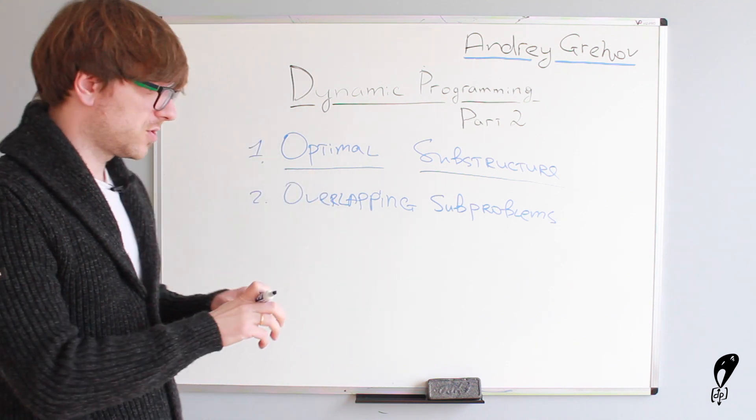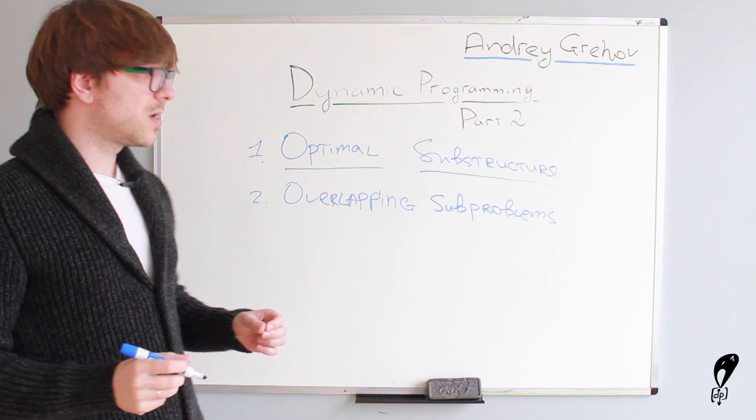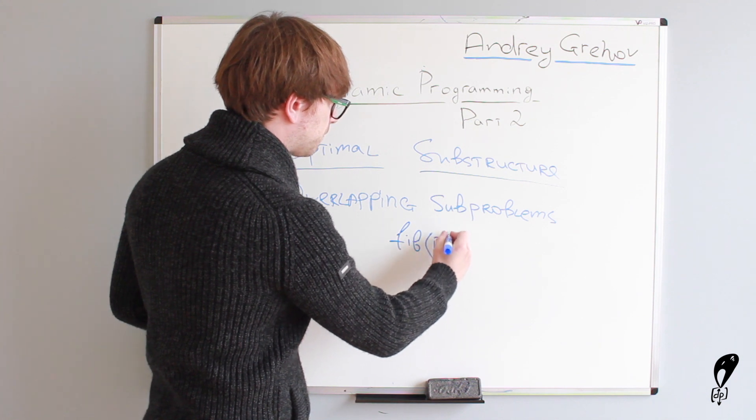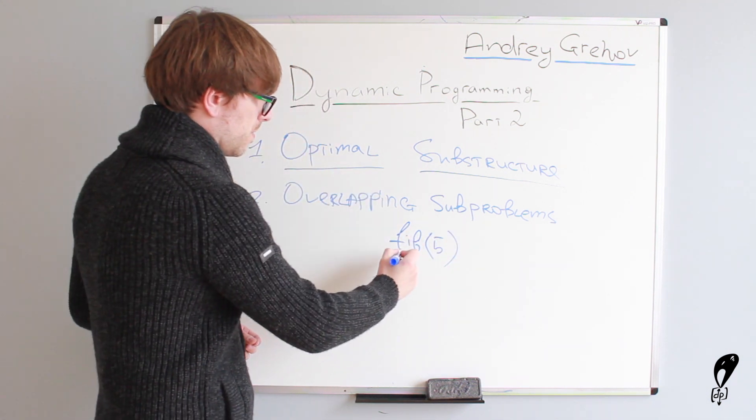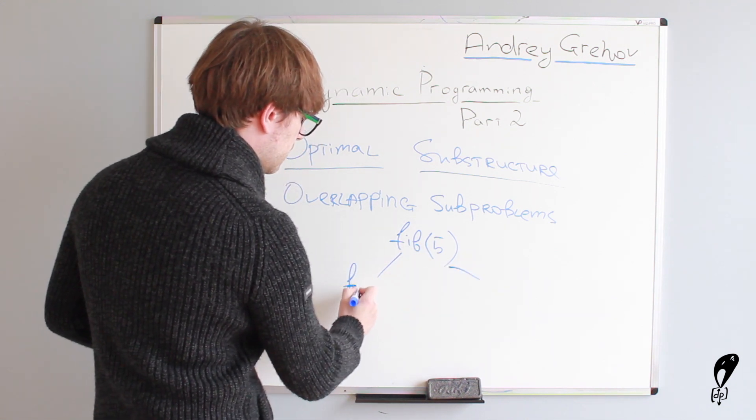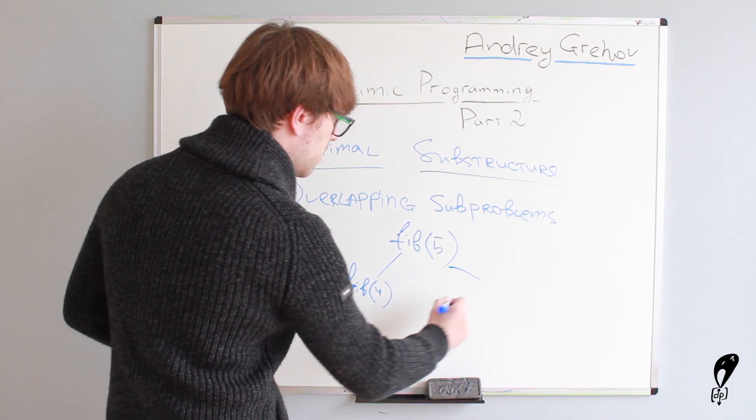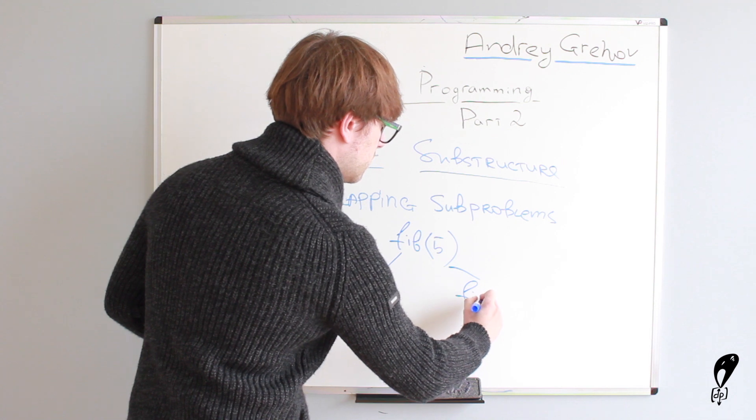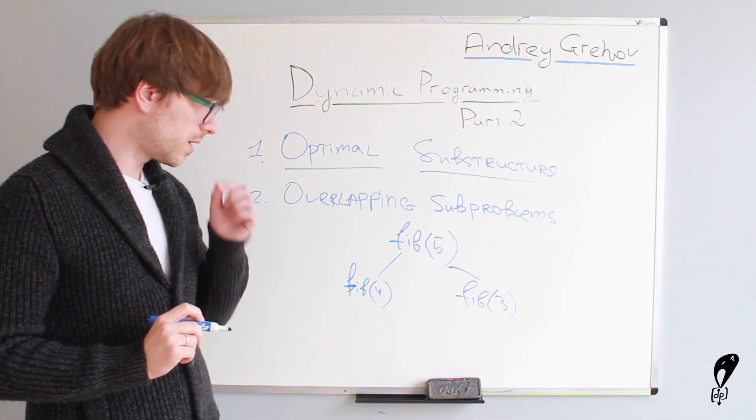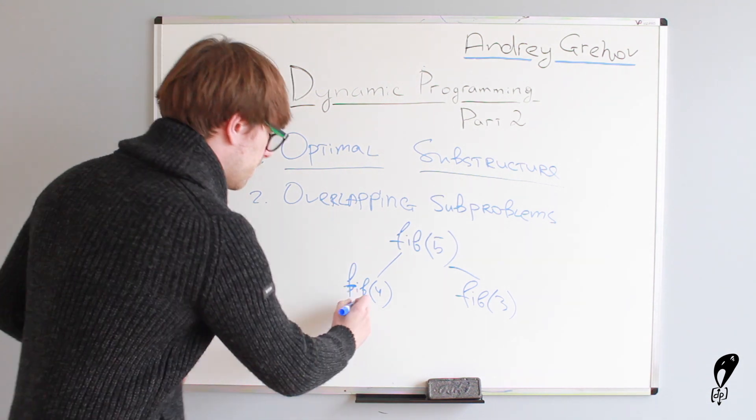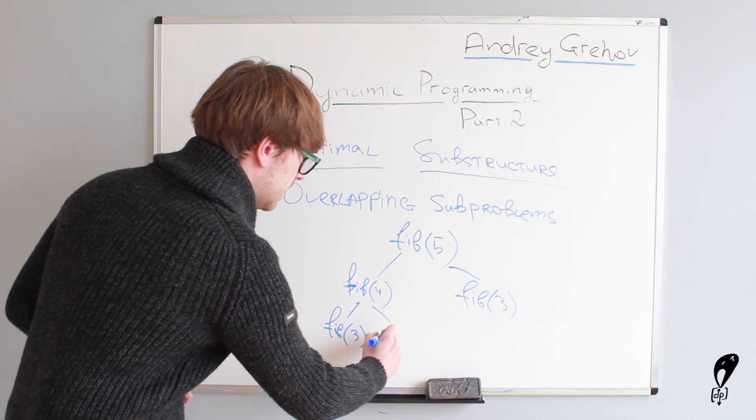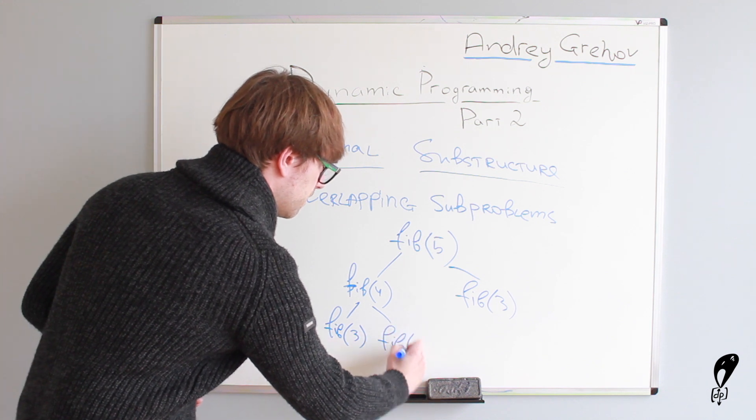Many textbooks use the Fibonacci's recursion tree as an example. So, let's take a look at the recursion tree. If we want to calculate Fibonacci of 5. So, the first call we say Fibonacci of 5, right? And then in order to calculate Fibonacci of 5, we need to calculate Fibonacci of 4 and then Fibonacci of 3. In order to calculate Fibonacci of 4, we need to calculate Fibonacci of 3 and Fibonacci of 2,